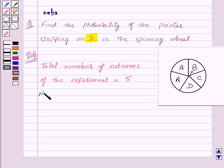Now the number of outcomes that make the event. Now the event is that the pointer stopping on D. So this is the event in this question. And now there is only one D. So the pointer can stop at D only once. So the number of outcomes that make the event are 1.